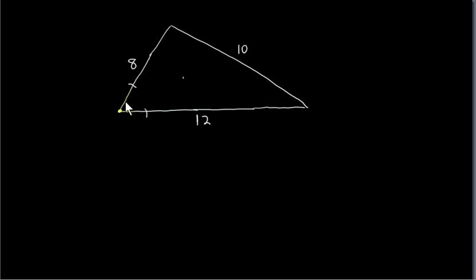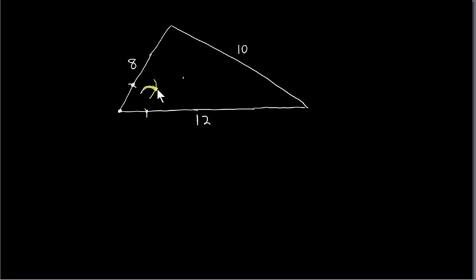It doesn't matter what the setting is. Then what you could do is take the compass, put the compass point here, set the compass to some other distance, and scribe an arc. Then, with the compass set to the same extension, put the point here and scribe another arc. And where the two arcs cross, join that point to the corner, and you will have bisected this angle.